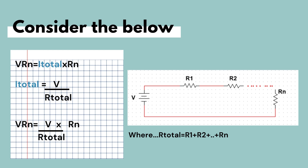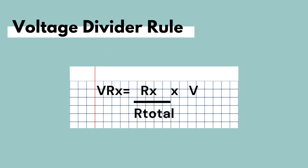Therefore, substituting I total's equation into VrN's equation, we get the following. VrN, the voltage across resistor RN, is equal to RN over the total series resistance, times the voltage of the power supply. Where R total is the sum of the series resistances. Therefore, rather than using KVL in our analysis to find the voltage on series elements, we can directly obtain the voltage of a series resistance using the voltage divider rule.